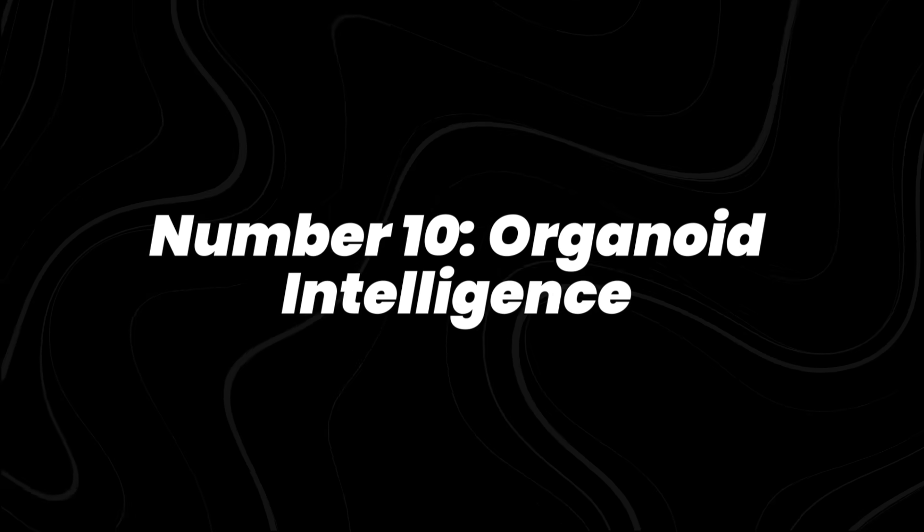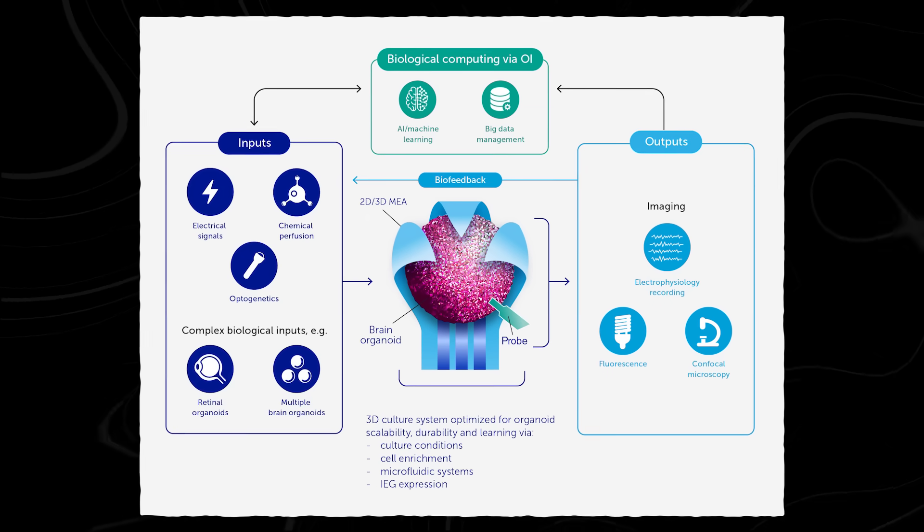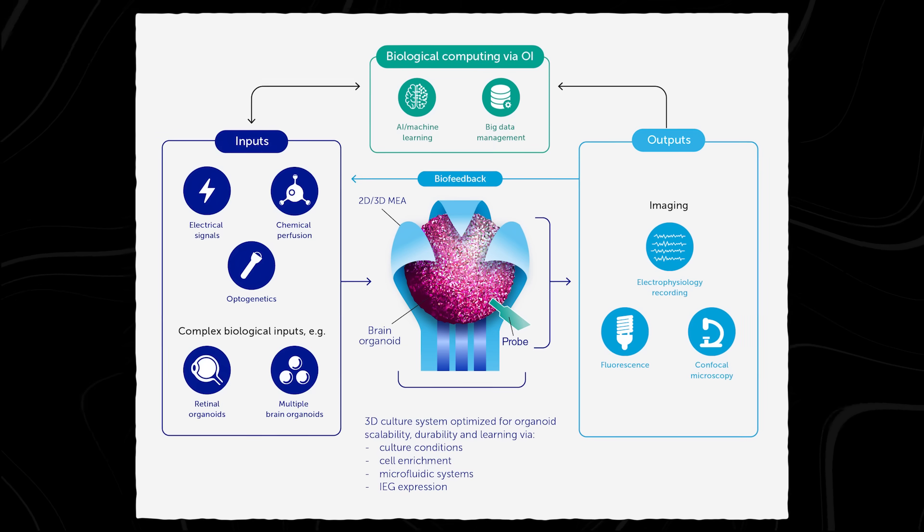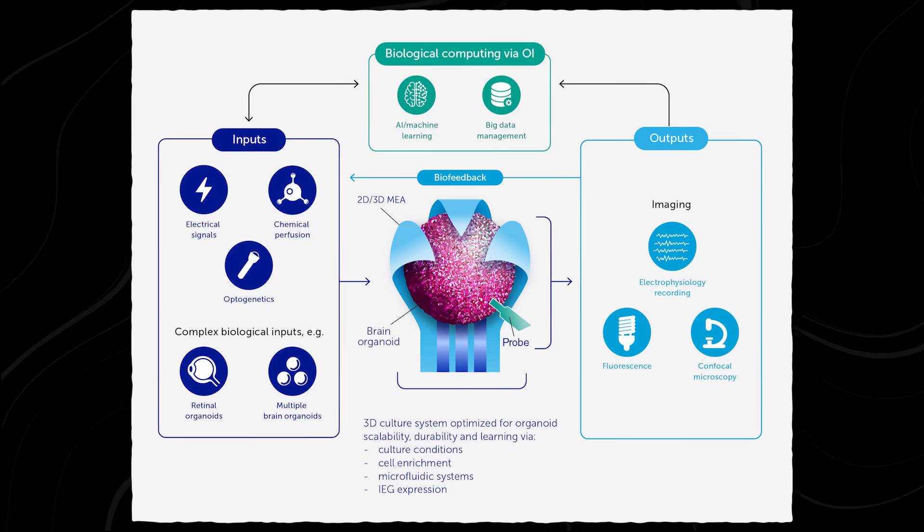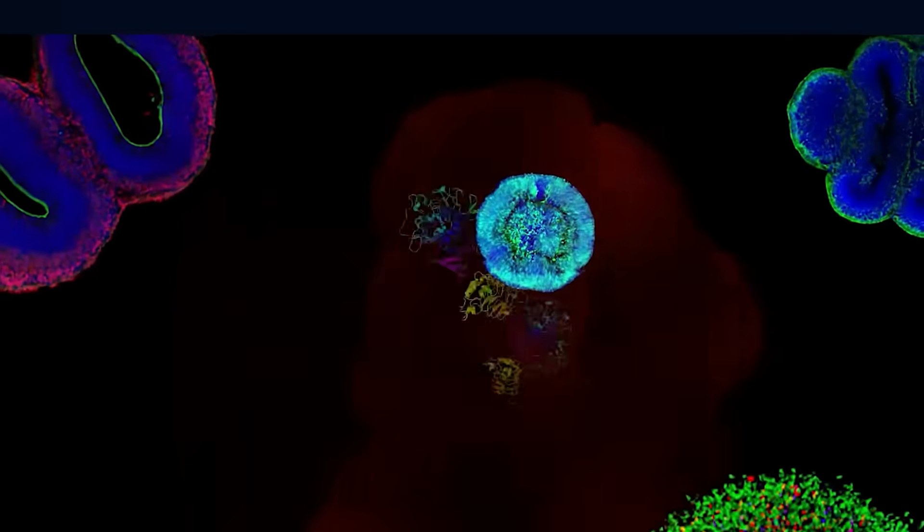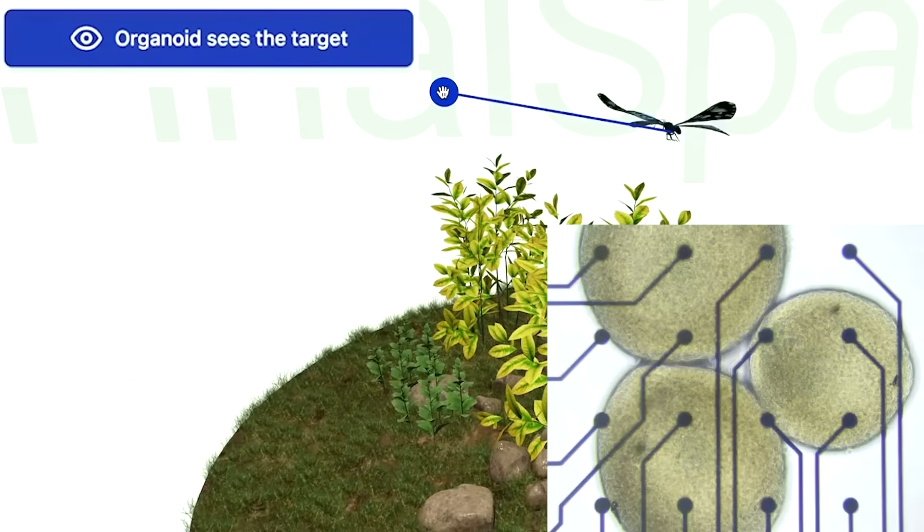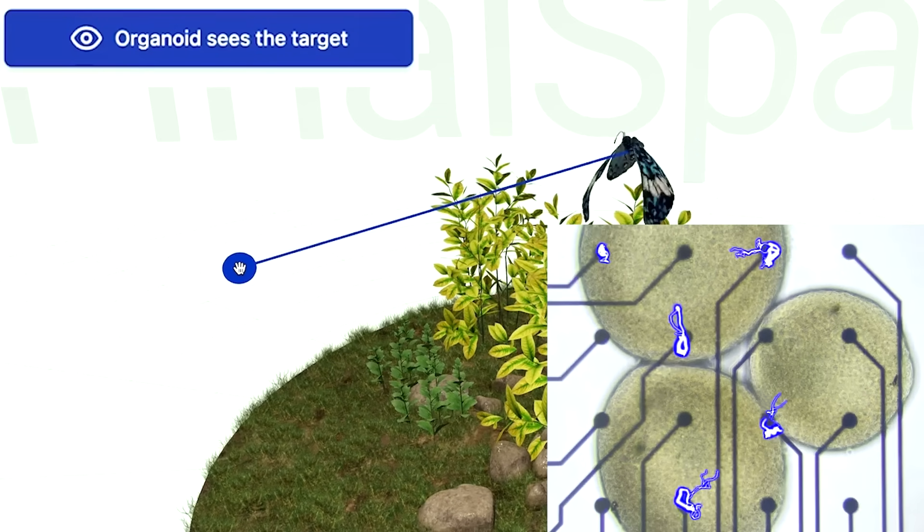Number 10, organoid intelligence. Organoid intelligence uses lab-grown clusters of human and animal brain cells, mini-brains, to process information. Unlike silicon chips, these living neural networks learn and adapt using biological efficiency. Researchers have trained organoids to control simple computer tasks and respond to stimuli.